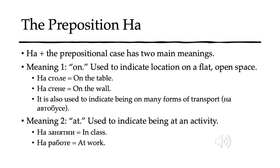We also use na to indicate being on many forms of transport. For example, na autobusje means on the bus. So just like in English, in Russian you would be on a train or on a bus.